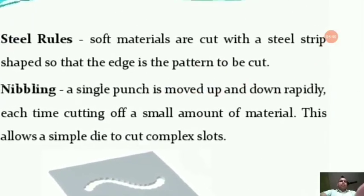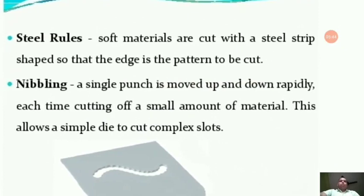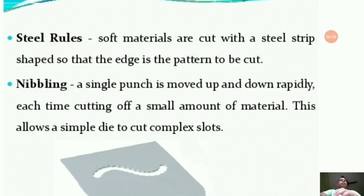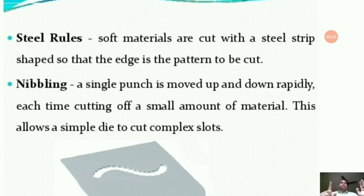Now let us look at some of the most commonly used tools and equipments widely used in sheet metal operations. The first one is the steel rule. A steel rule is simply a scale — just like the scale you use during drawing — but made of steel. Previously scales were made of fiber or glass, but steel rules used for sheet metal operations are made of steel only.